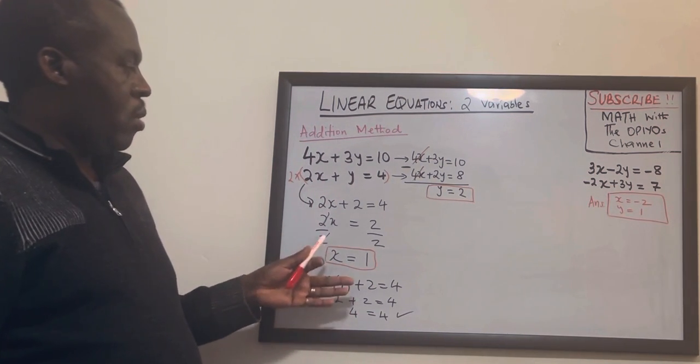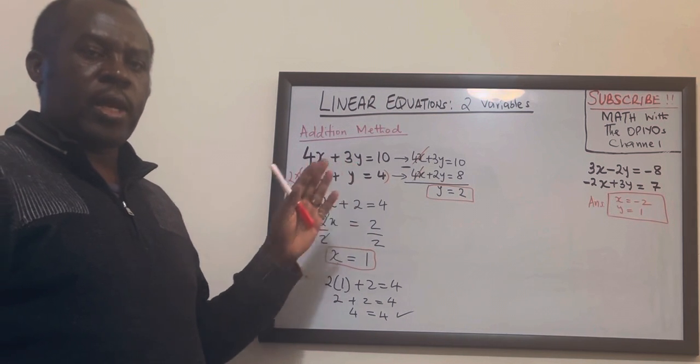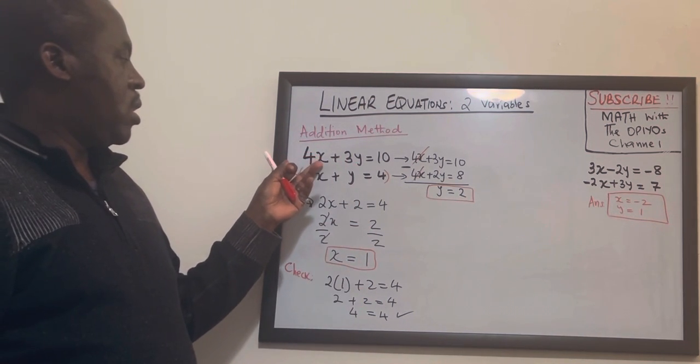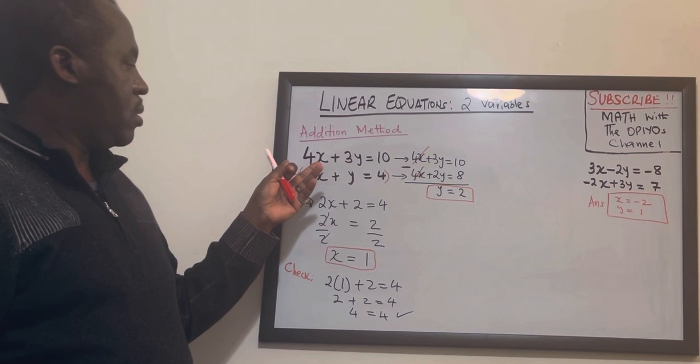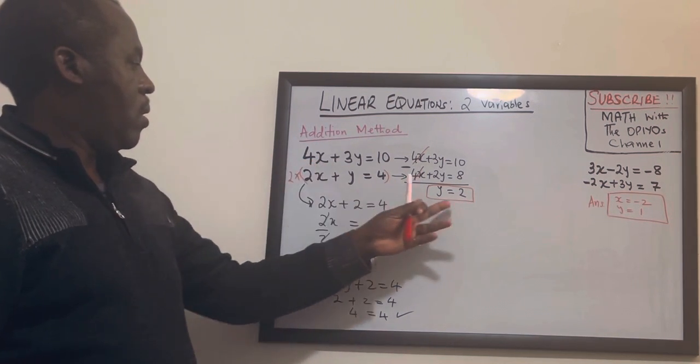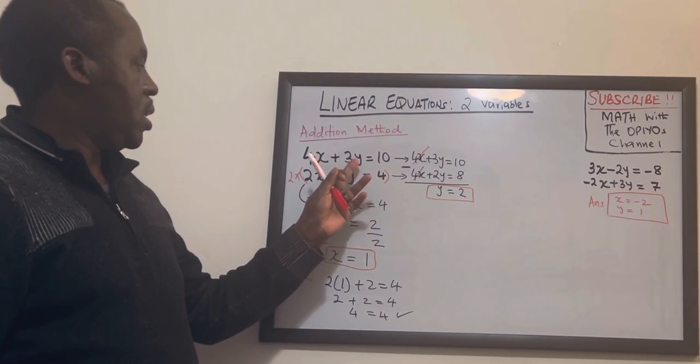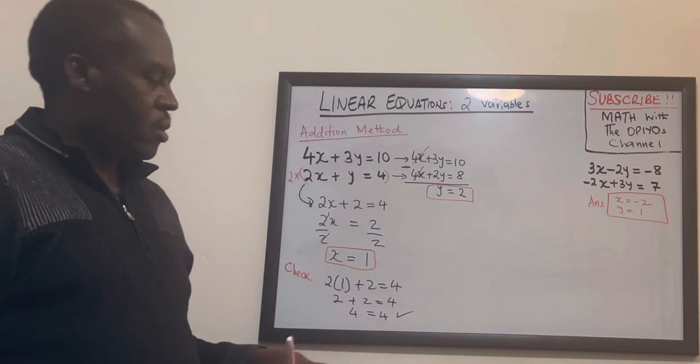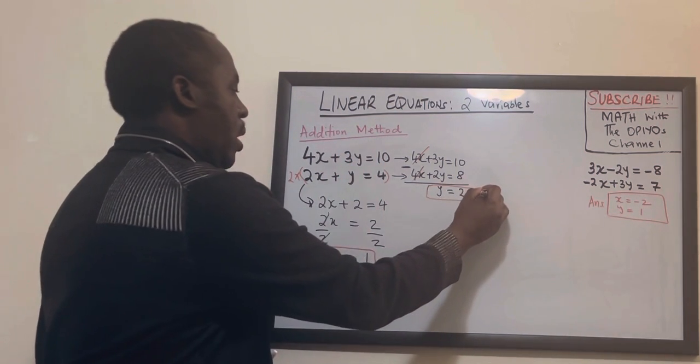So you can always check. It's always a good practice to check and make sure that your answer is correct. You can do the same with this. You just substitute the value of x which is 1 so that gives you 4. Y is 2 that gives you 6. 6 plus 4 is 10. So these two answers are correct.